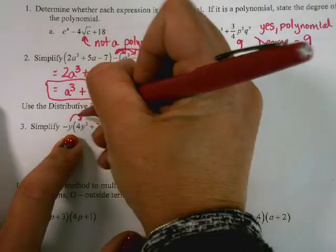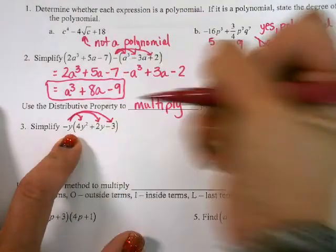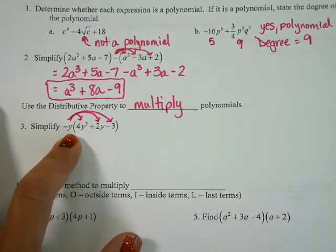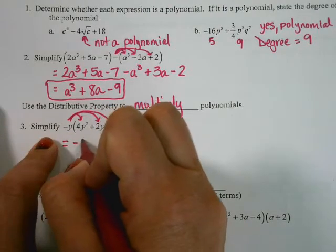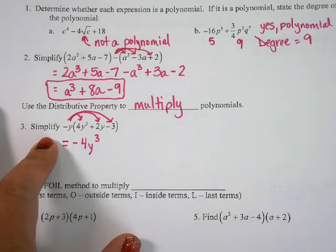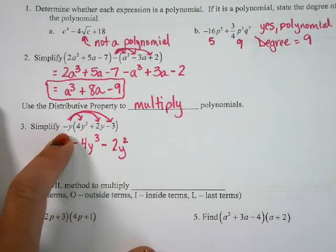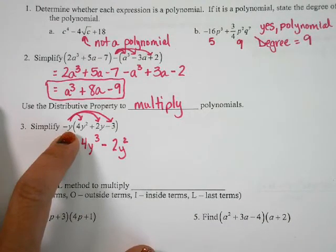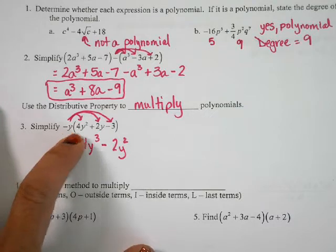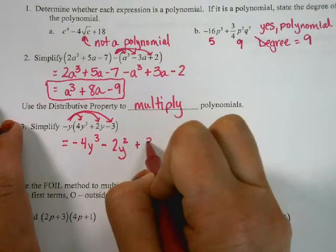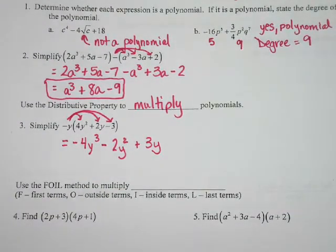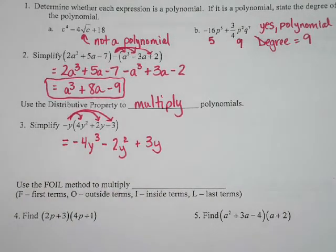In number 3, I'm going to multiply everybody by a negative y. Remember, when you're multiplying, keep the base and add your exponents. So negative y times 4y squared becomes negative 4y to the third. Negative y times 2y becomes negative 2y squared. And negative y times negative 3 becomes positive 3y. In order for terms to be like terms they have to have the same variable and the same exponent, so this is our final answer: negative 4y cubed minus 2y squared plus 3y.